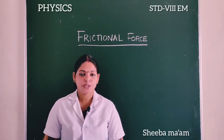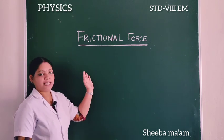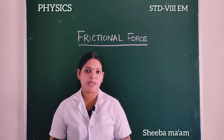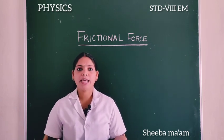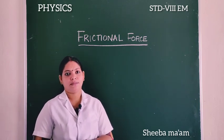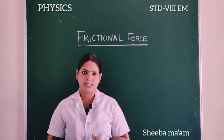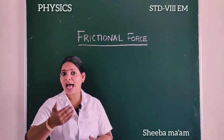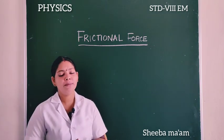Hi students, today we are going to discuss about a type of force — frictional force. Imagine you are rolling a metal sphere or a rubber board on a level ground. What happens to the motion of the board? After some time, the board comes to rest. What is the reason? It is due to a force that acts parallel to the surface and opposes the motion of the board.